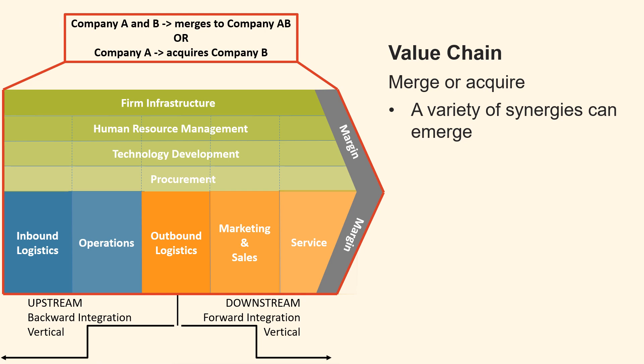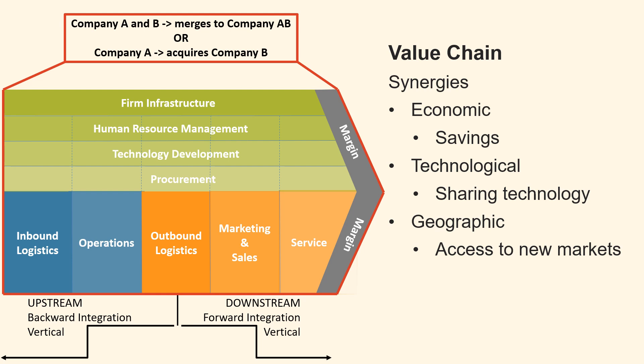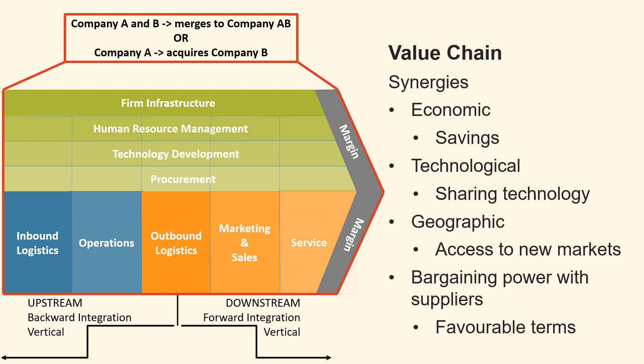When two companies merge or one company acquires the other, a variety of synergies may emerge. Economic synergies result in savings by reducing costs through joint procurement, utilising shared facilities, or eliminating redundant functions. Technological synergies arise from sharing technology and innovation, which can result in the creation of new products or enhancement of processes. Geographic expansion through mergers and acquisitions can grant access to new markets and broaden the company's customer base. Mergers and acquisitions can also increase a company's bargaining power with suppliers, potentially securing more favourable purchasing terms.